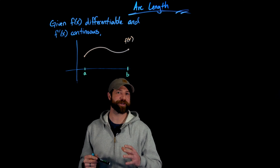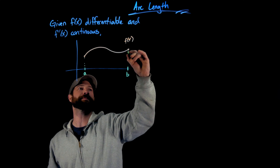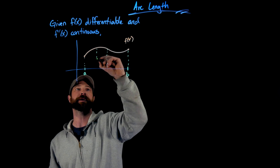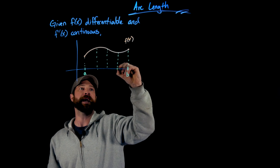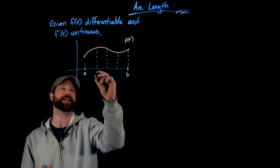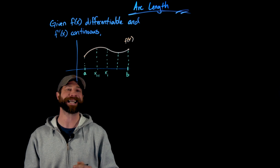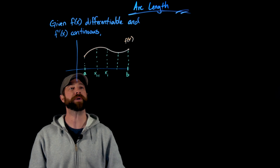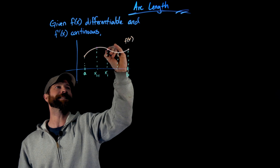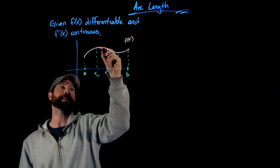At this point you probably know what we're going to do. The first thing we're going to do is create some sub-intervals. I'll break this up into four sub-intervals just to illustrate the point. I'm going to investigate one of these — let's call this the ith interval. So this is x_i minus one, and this is x_i. I'm going to approximate the distance between these two points on this interval with a straight line.